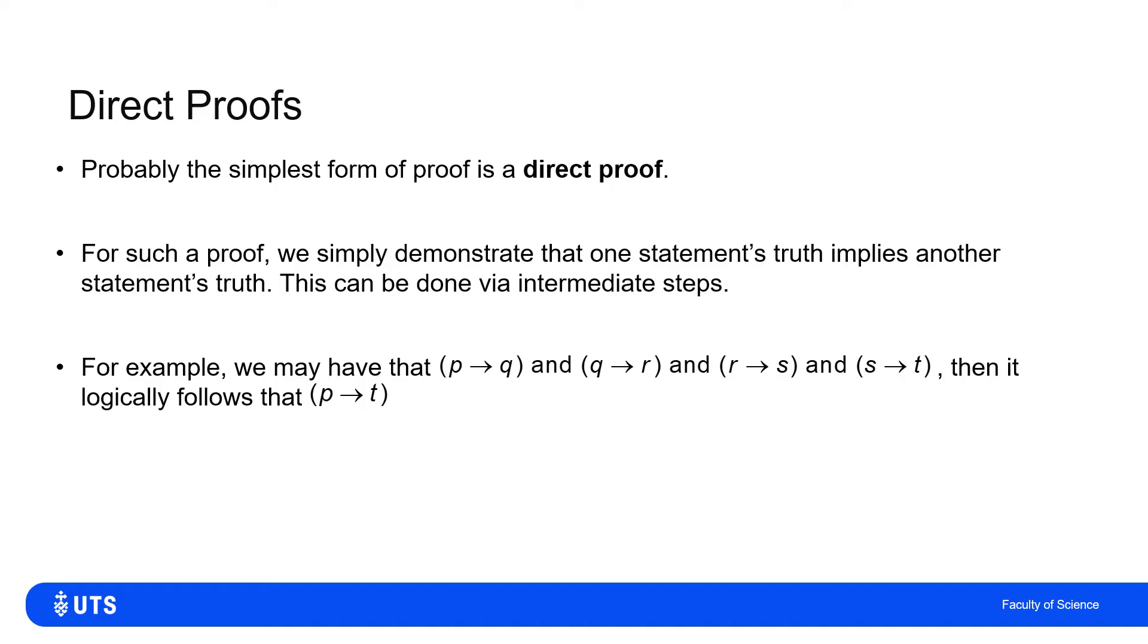And these we can see fairly clearly through implications. If I know that the statement P being true implies Q being true, and every time Q is true, that means R is true, and every time R is true, that means S is true, and every time S is true, that means T is true, we can say by direct proof that P implies T, that every time P is true, that means T is true.